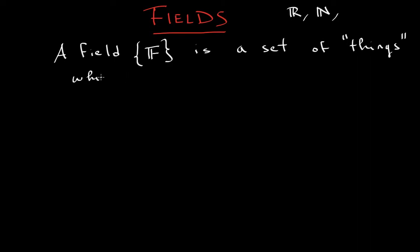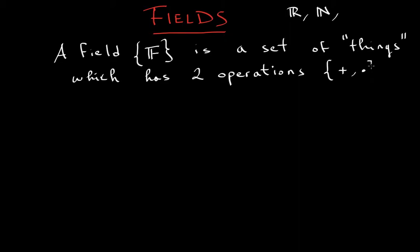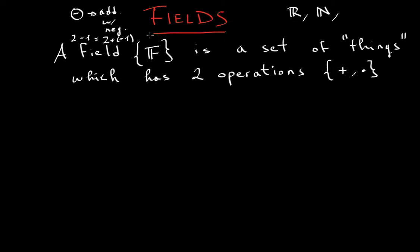There are some weird fields, and we will talk about my favorite one — we will be talking about tropical numbers in a different video. For now, you need to know that a field is basically a set of things which has two operations. You can almost guess what those operations will be: addition and multiplication. You may be asking yourself, why do we choose these? Why not subtraction or division? Well, if you think about it, any subtraction is just addition with a negative number. Two minus one is the same as two plus negative one — you're just adding a negative number.